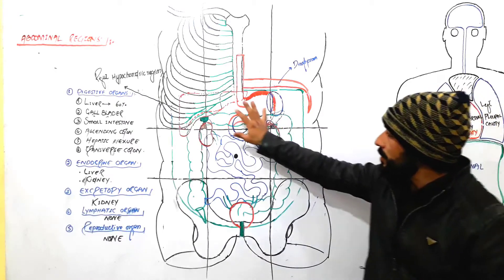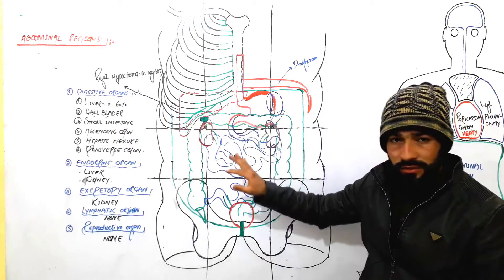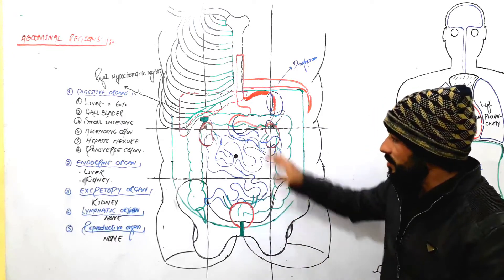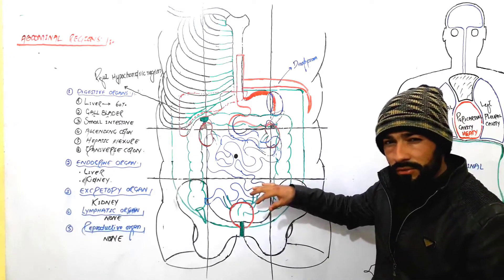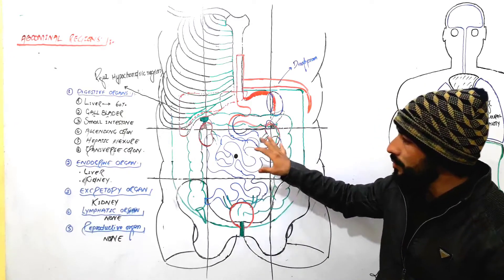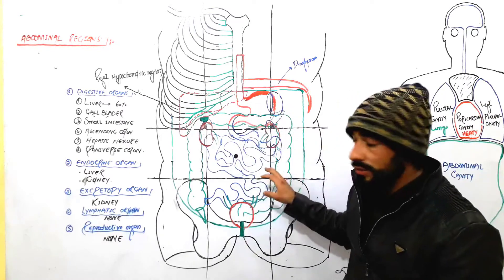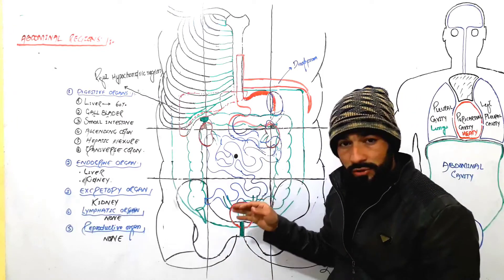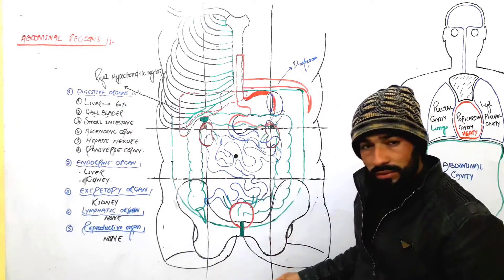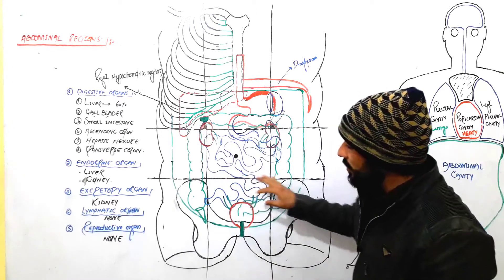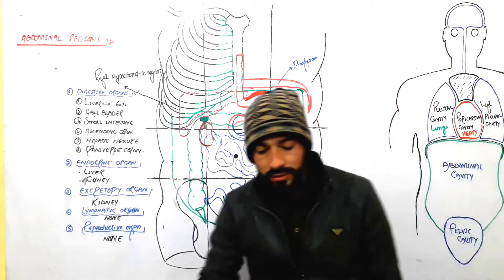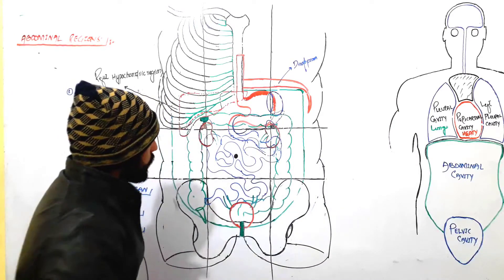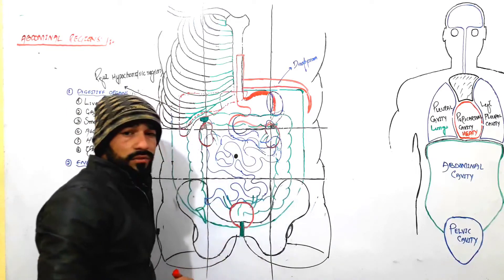Now I'm going to discuss the organs which are present in the epigastric region. In the first video, when I started the discussion on abdominal regions, I introduced all these important regions and the lines — how we draw these lines and which parts of the abdomen correspond to which parts from upper to down. I have already recorded about them and will give the links in the description.